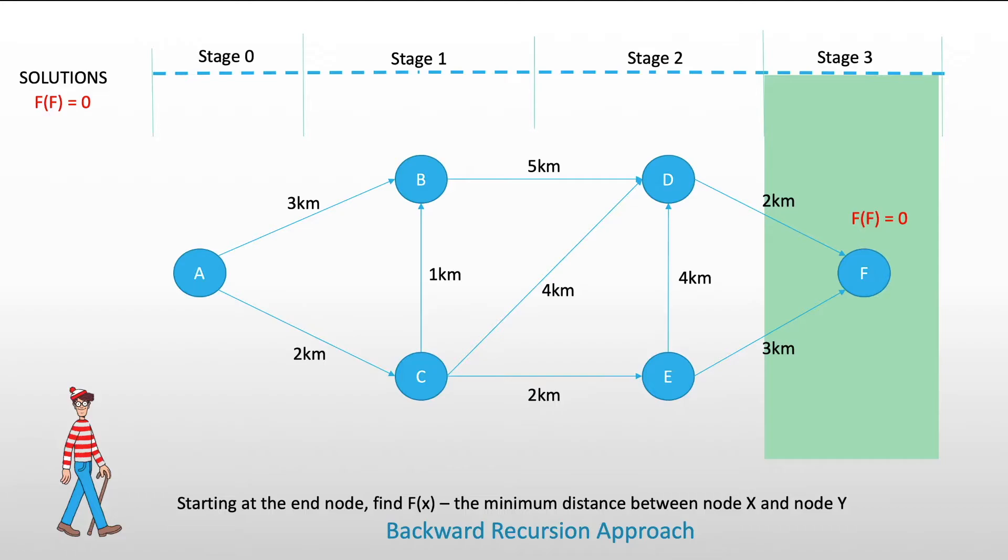After that, we move back up to stage 2. At stage 2, we have two nodes to consider, node D and node E. Here, we have to find f of D. From D, there is only one way to go to F, and that is direct at 2 kilometers. Therefore, the value of our f of D is equal to 2.